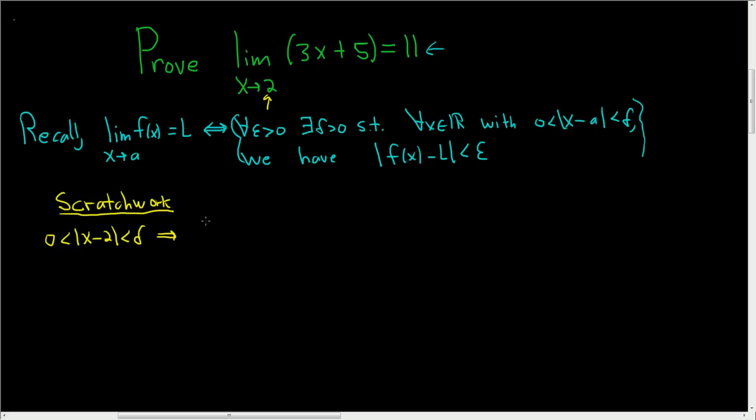that the distance between f of x and l is smaller than epsilon. So this here is our f of x, 3x plus 5, and our l in this problem is 11, so minus 11. And we want this to be smaller than epsilon.